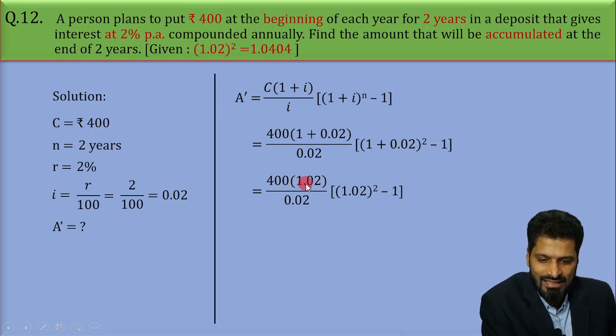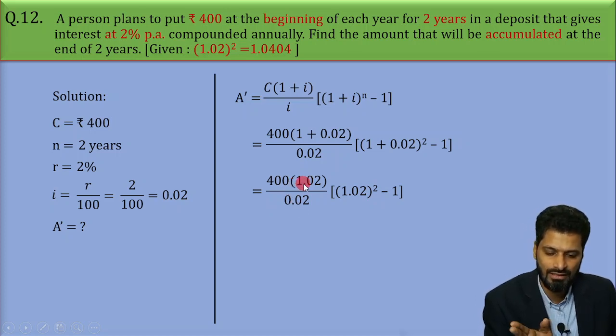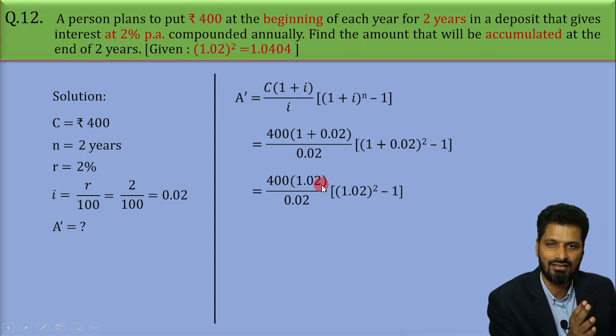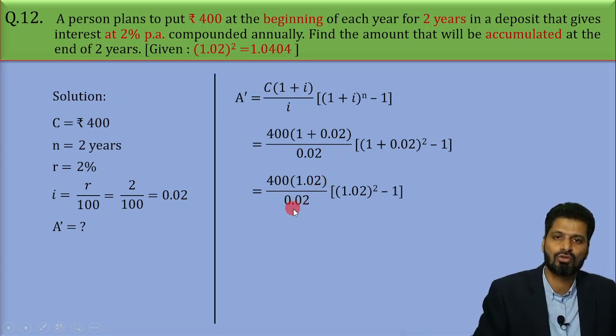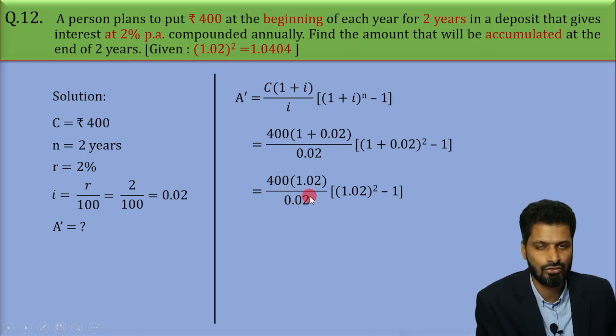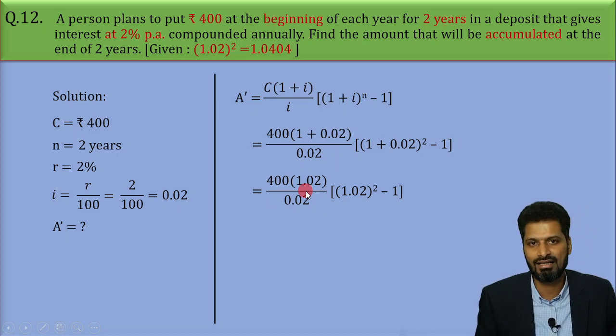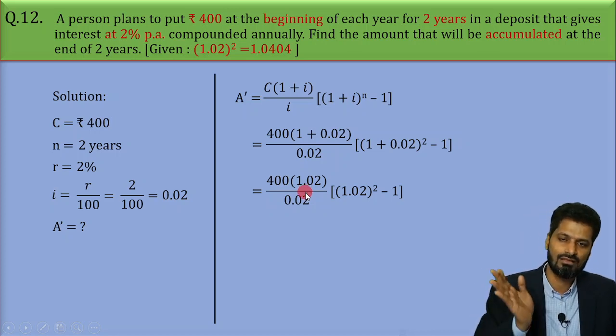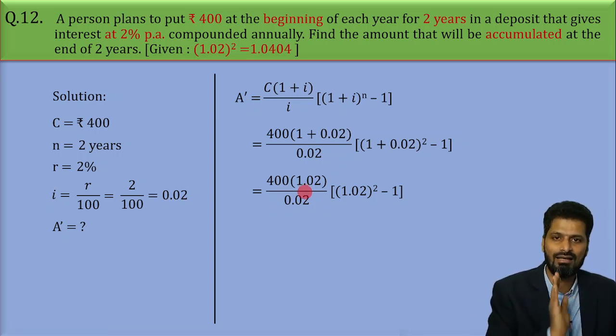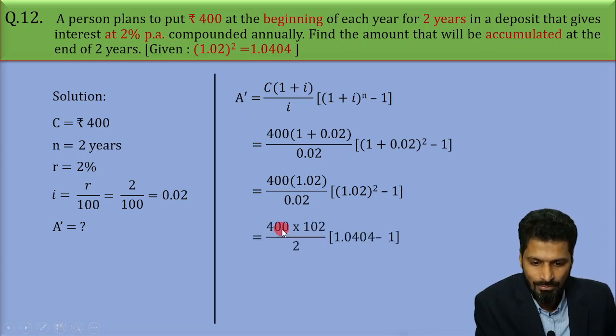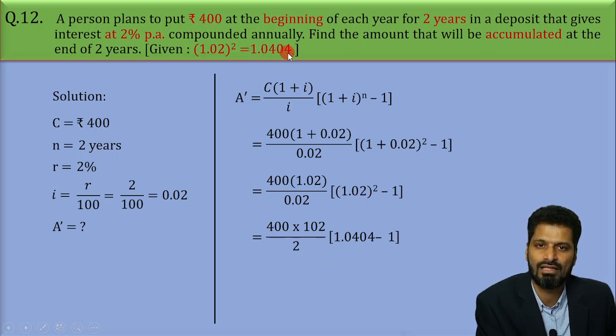Now, in the next step we can shift this decimal in the numerator two digits on the right hand side and balance the denominator. We are shifting the decimal towards the right hand side by two digits. So, next step we get 400 into 102 divided by 2 and 1.02 square is given as 1.0404 and minus 1.